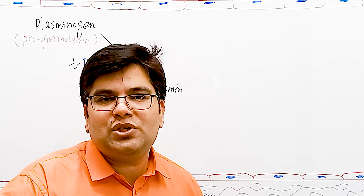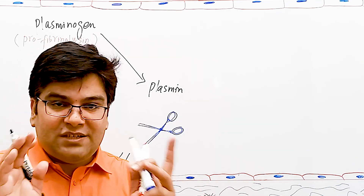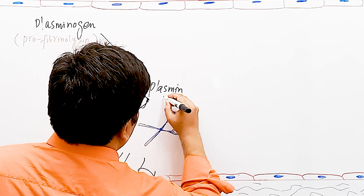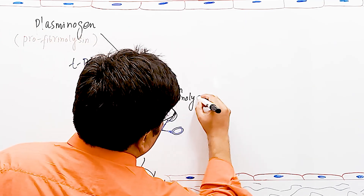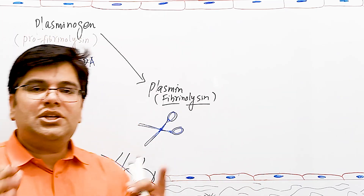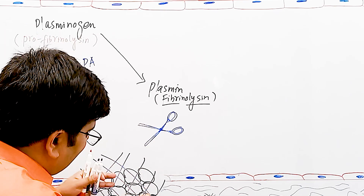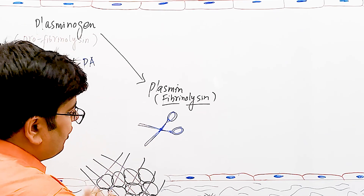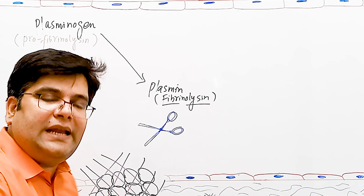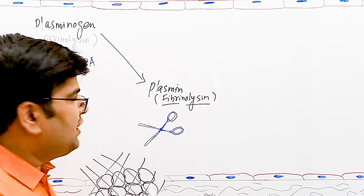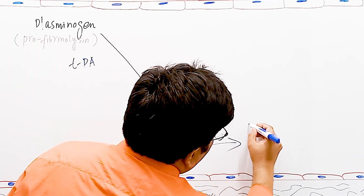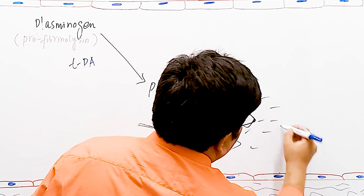Plasmin, which is the activated form of plasminogen, is also called fibrinolysin because it causes lysis of the fibrin meshwork. The action of plasmin is just like a scissor — it cuts the fibrin fibers and causes clot dissolution. During this process, when fibrin fibers are degraded by the proteolytic action of plasmin, they are converted into small products.